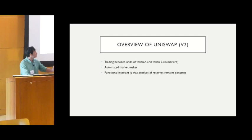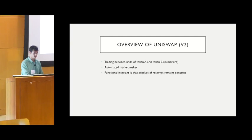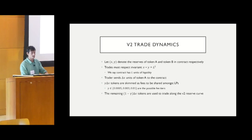We'll give an overview of V2 and then talk about the extra features of V3 used in the liquidity provision strategies we study. V2 is a decentralized exchange that trades between two tokens, token A and token B — an automated market maker with a functional invariant where the constant product of the reserves remains constant throughout trades. Notationally, the state of the contract is denoted as a tuple (x, y), and all trades must respect the fact that the product of these two reserves is constant.